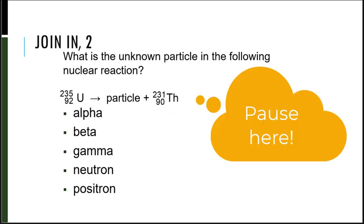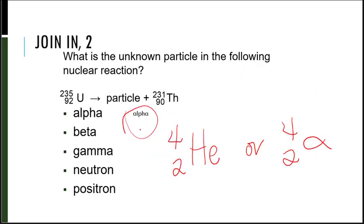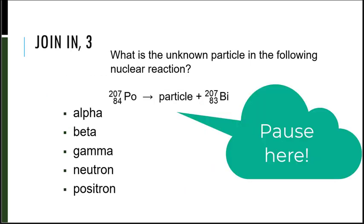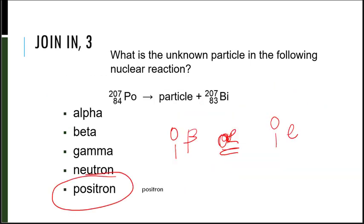What is this unknown particle? It's got to be an alpha particle or the helium nucleus. 92 on the left and this is 90, so I need an atomic number of 2 here. 235 and this is 231, so I need a mass of 4. Pause the video here for this one. It must be a positron — 84 on the left, this is 83, so I need 1 more on the right, giving me a bottom number of 1. And 207 and 207 would be a mass of zero — that would be a positron.